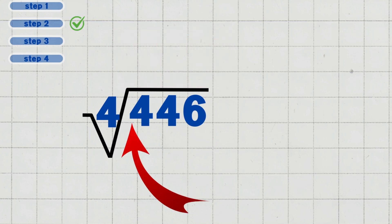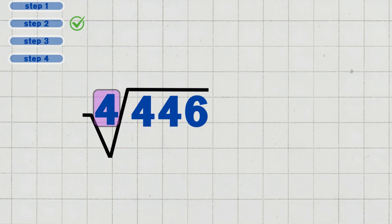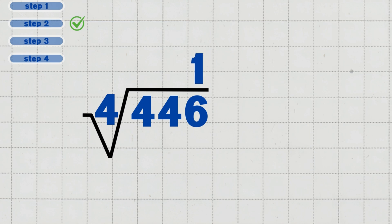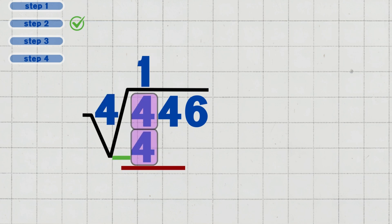Step two: divide the first digit. Look at the first digit four in four hundred and forty-six. Four divided by four equals one. Write one above the four in the quotient. Multiply one times four, which equals four. Subtract four minus four, which equals zero.